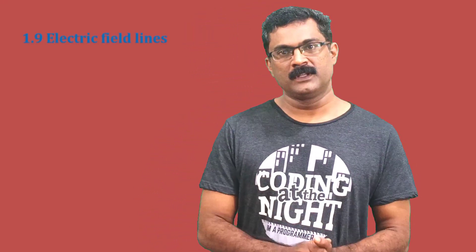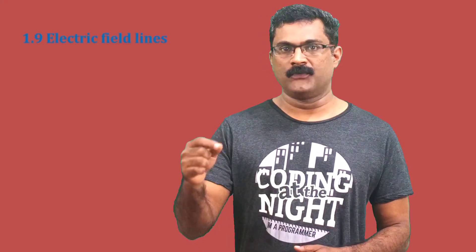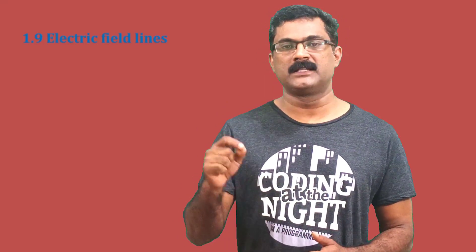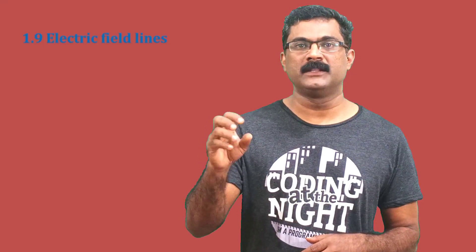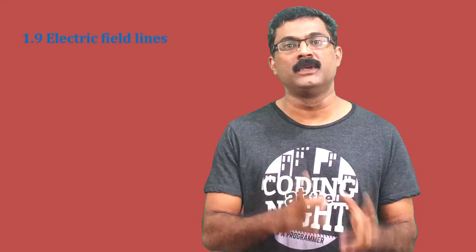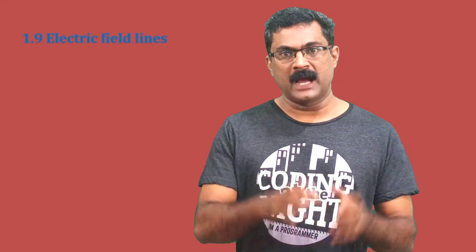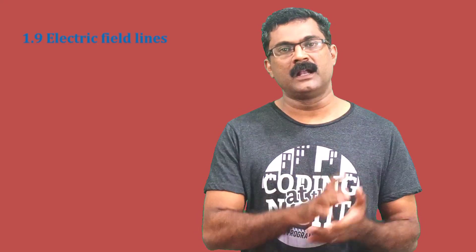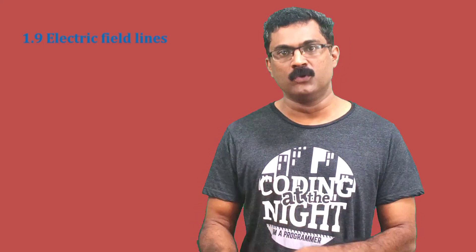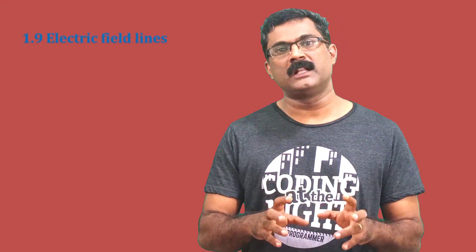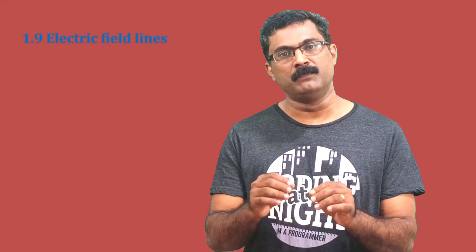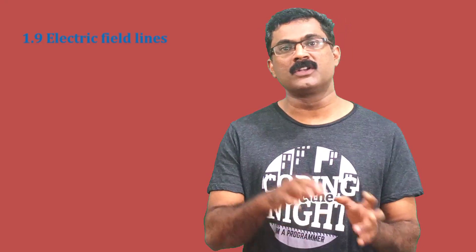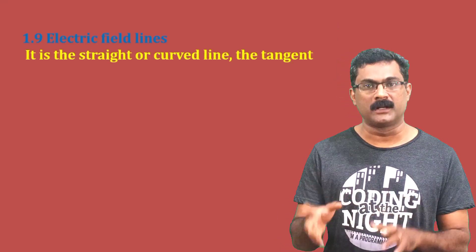We are going to talk about electric field lines. This method was introduced by Michael Faraday. An electric field line is an imaginary line that gives the direction of the electric field at that point.